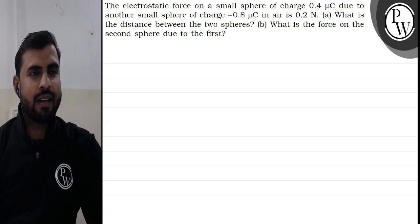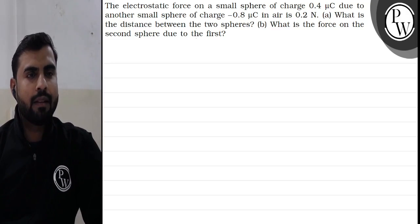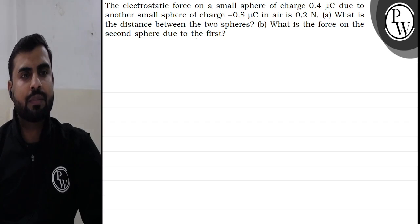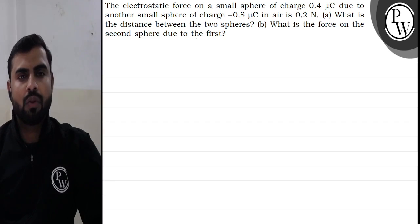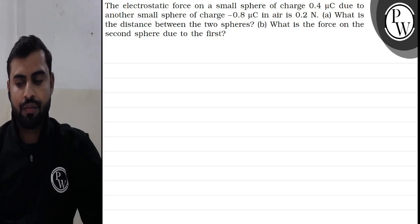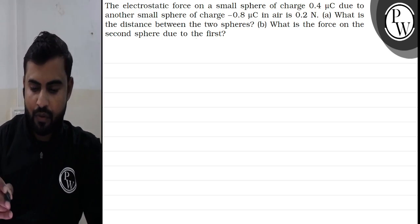Hello everyone, let's read out this question. The electrostatic force on a small sphere of charge 0.4 microcoulomb due to another small sphere of charge minus 0.8 microcoulomb in air is 0.2 Newton. What is the distance between the two spheres and what is the force on the second sphere due to the first? This is a simple question.